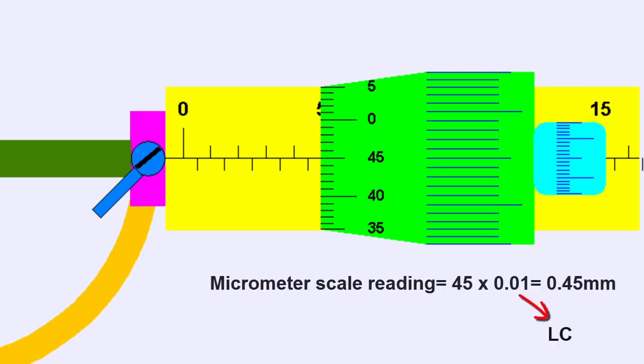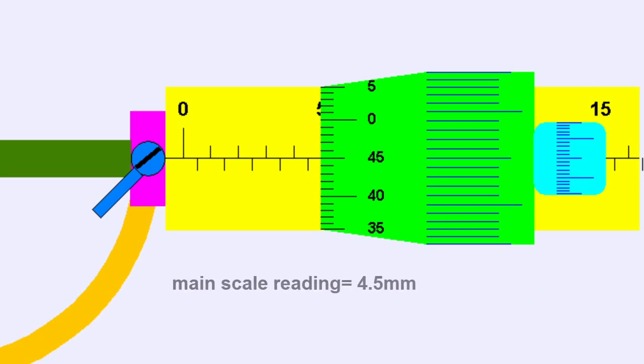After that, we multiply the 45th division by the least count to get 0.45 mm. To recall, 4.5 mm is the main scale reading, while 0.45 mm is the micrometer scale reading.